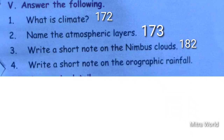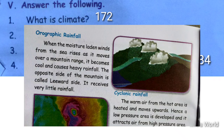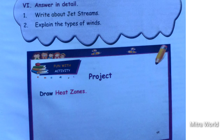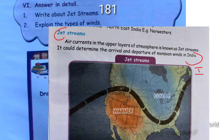Fourth question — write a short note on orographic rainfall. Take page number 184. When the moisture-laden winds from the sea rise as they move over a mountain range, they become cool and cause heavy rainfall. The opposite side of the mountain is called the leeward side and receives very little rainfall. Next detail question — write about jet streams. Take page number 181. Air currents in the upper layers of the atmosphere are known as jet streams. They determine the arrival and departure of monsoon winds in India.